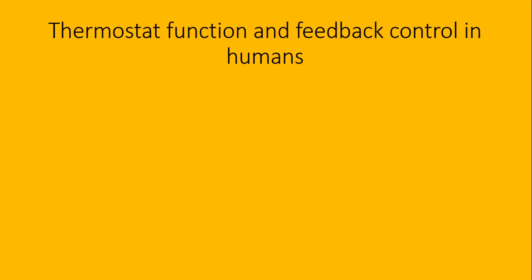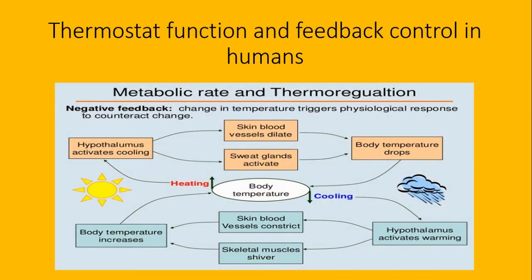Thermostat function: ہماری body کے اندر temperature regulation کو maintain کرنے کے لئے ایک ایسا system ڈال دیا گیا ہے that is known as thermostat۔ Thermostat کا function ہے کہ اگر کوئی بھی temperature میں change آیا ہے تو یہ اس کو thermoregulate کرے گا اور homeostasis create کرے گا۔ جب بھی کوئی باہر سے stimulus آتی ہے تو دو قسم کے effects ہو سکتے ہیں - یا تو positive feedback ہوگا یا پھر negative feedback ہوگا۔ ہمارا thermostat hypothalamus ہے جو brain میں present ہے۔